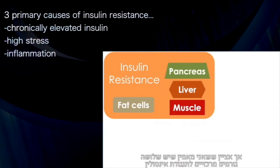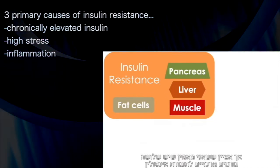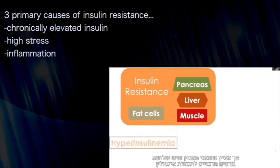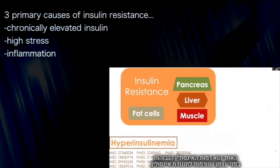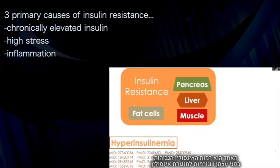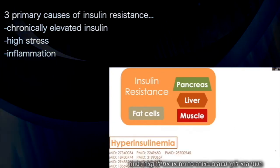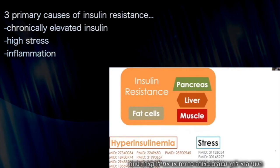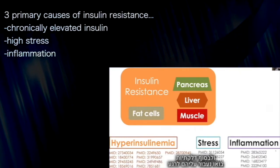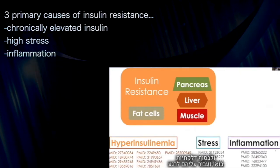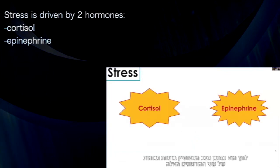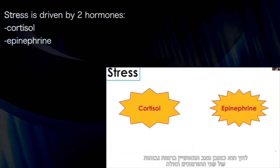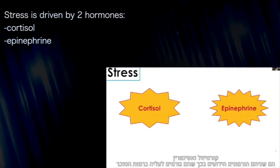The causes of insulin resistance — I believe there are three primary causes. One is chronically elevated insulin itself as a cause of insulin resistance. Second is stress — chronically or even acutely elevated stress. Third is acute or chronic inflammation. Stress is typified by two prototypical stress hormones: cortisol and epinephrine.